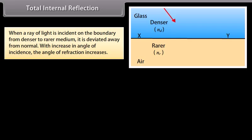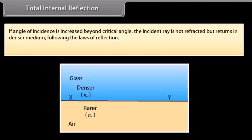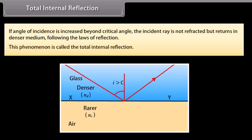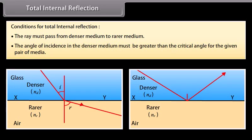Total internal reflection: When a ray of light is incident on the boundary from a denser to a rarer medium, it is deviated away from the normal. With an increase in the angle of incidence, the angle of refraction increases. For a certain angle of incidence in the denser medium, the corresponding angle of refraction in the rarer medium is 90°. This particular angle is called the critical angle, denoted by C. If the angle of incidence is increased beyond the critical angle, the ray is not refracted but returns into the denser medium following the laws of reflection — this is total internal reflection. Conditions: the ray must pass from denser to rarer medium, and the angle of incidence must be greater than the critical angle.